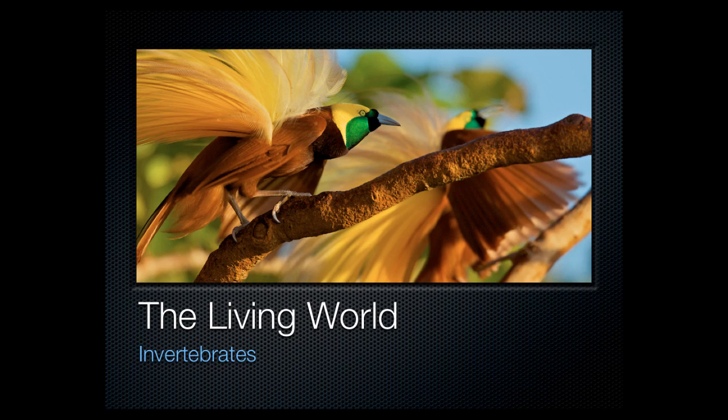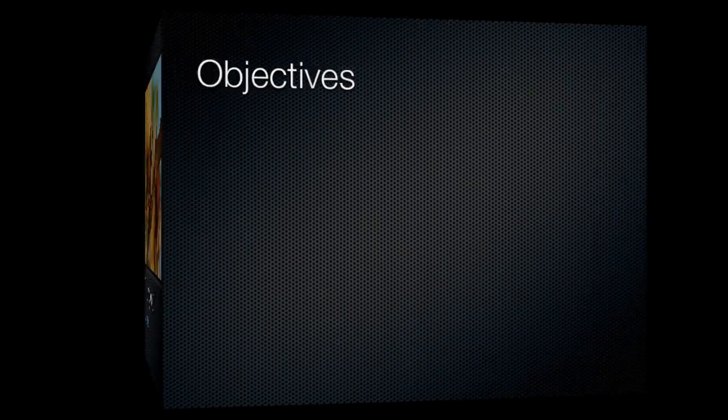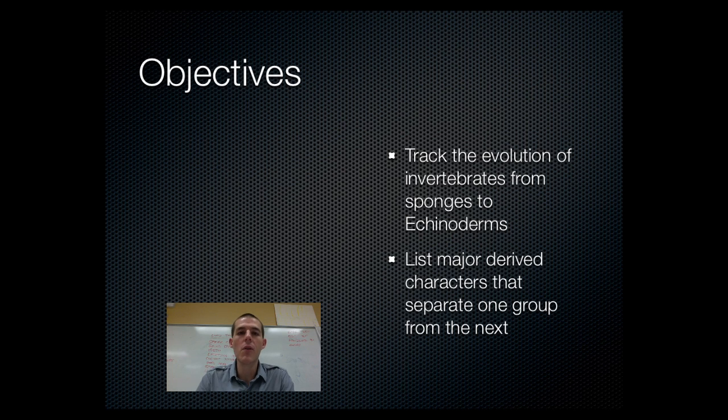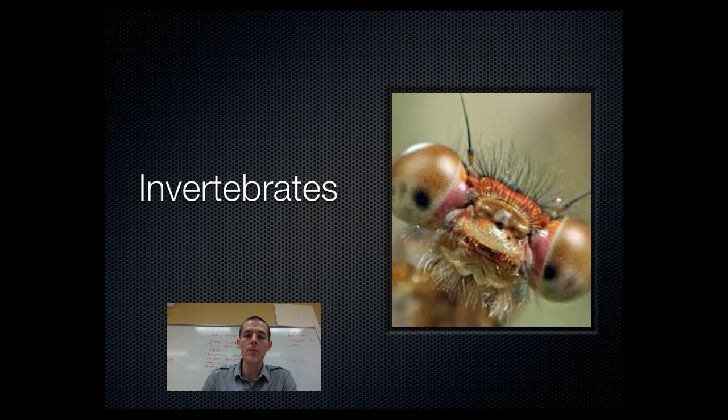Our main topic for today is invertebrates, and by the end of our chat today, there are two things that I need you to know or be able to do. The first is to track the evolution of invertebrates from sponges to echinoderms and list major derived characters that separate one group from the next. So how did we get from sponges all the way up to the starfish? Before we get going, let me just note that the invertebrates cannot be equaled in terms of sheer numbers and biomass. They are the most numerous organisms on the face of the earth.